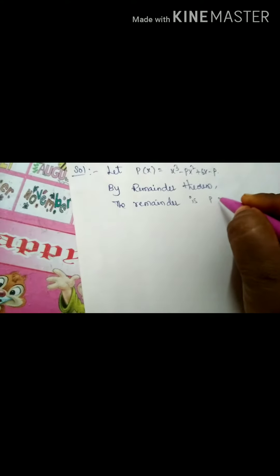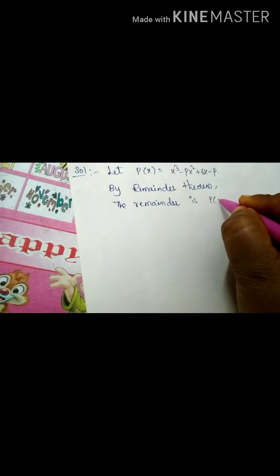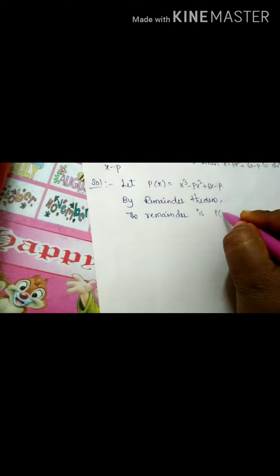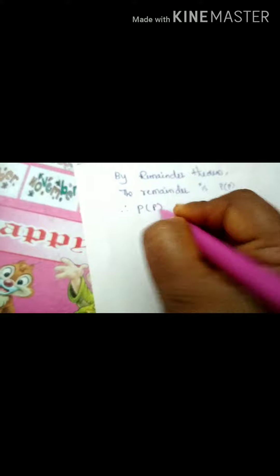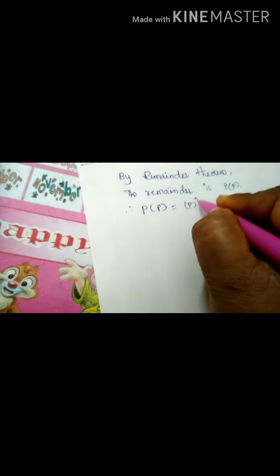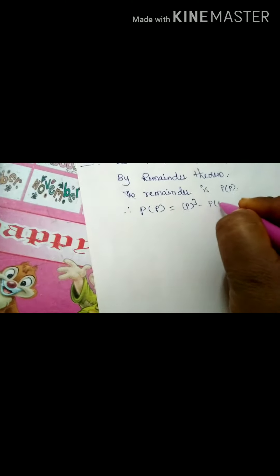Instead of a we should write p in the linear polynomial x minus p. So that we have to write in the place of a by p. Then p of p is equal to substitute the value as p in the place of x.